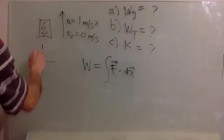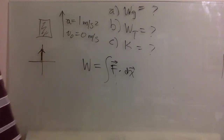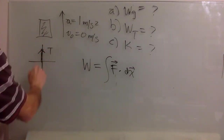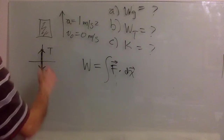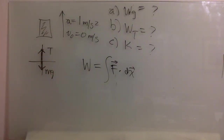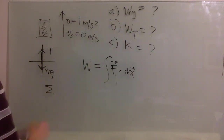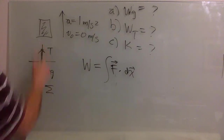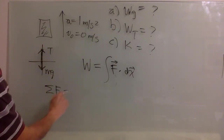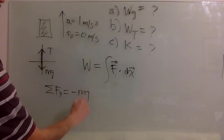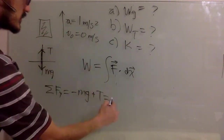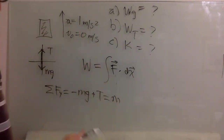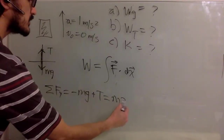You have tension moving up and gravitational attraction going down — that's it. So your equation of motion from Newton's second law: the sum of forces in y is going to be — minus because it's pointing down — mg plus tension, equals mass of the whole elevator times the acceleration.